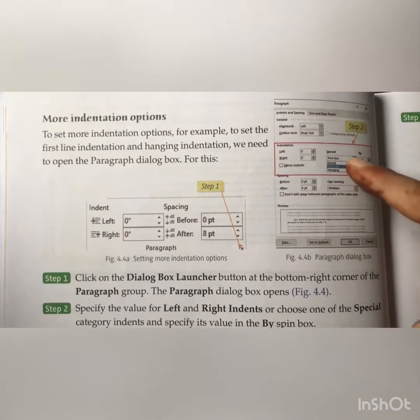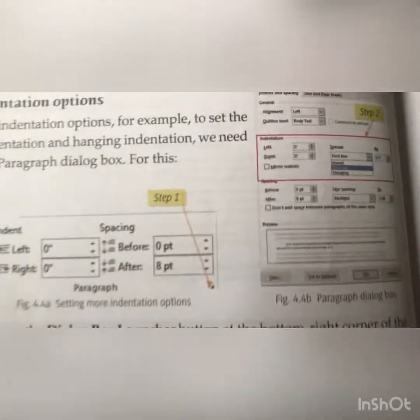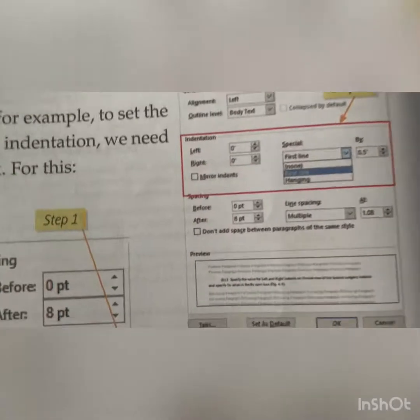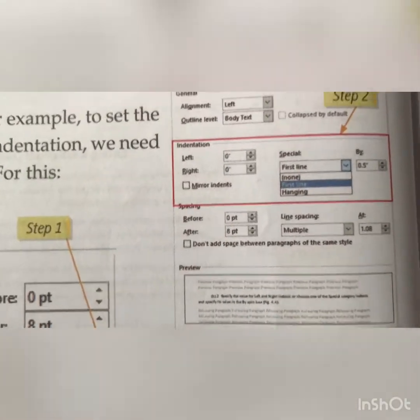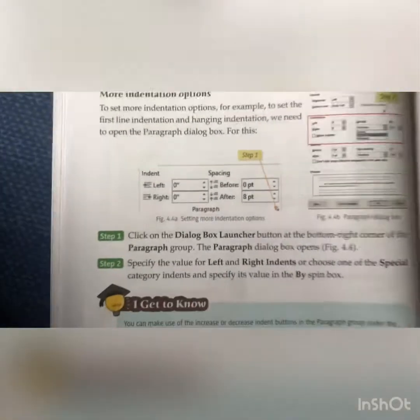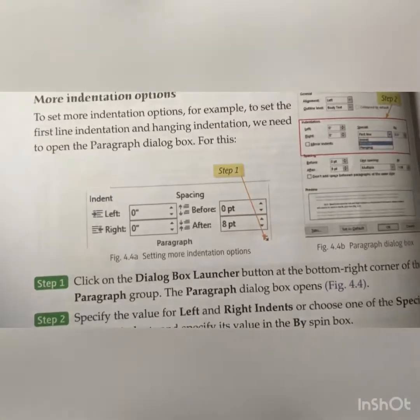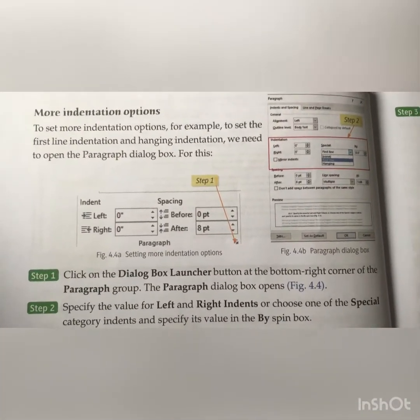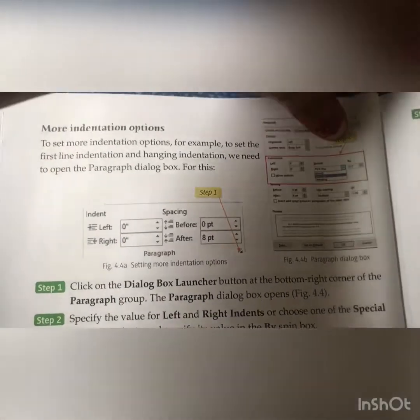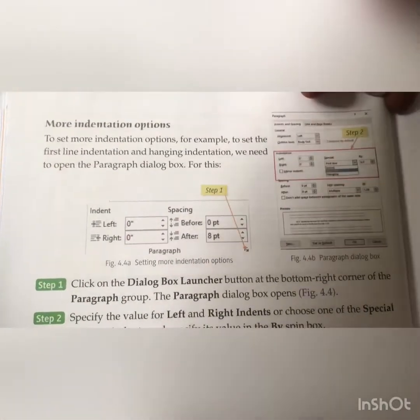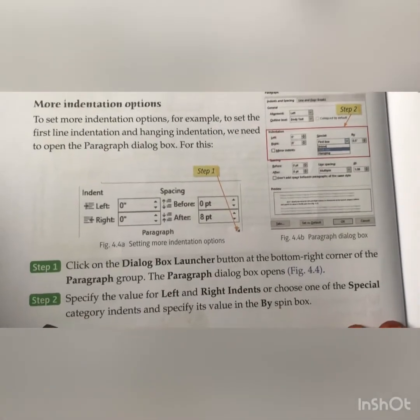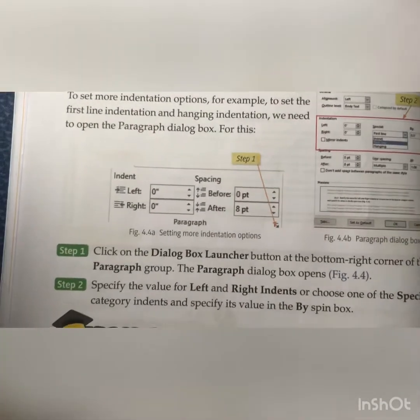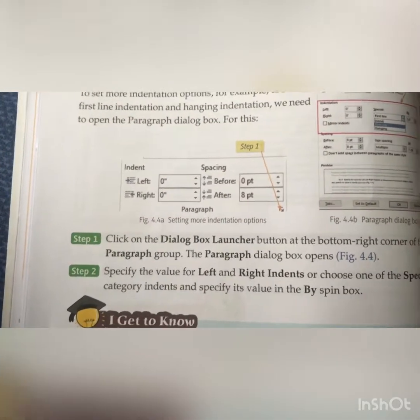In the special section there are two options: first line and hanging. We have to click on the dialog box launcher button at the bottom corner of the paragraph group. The paragraph dialog box opens. Select the right indentation category and specify its value using the spin box.